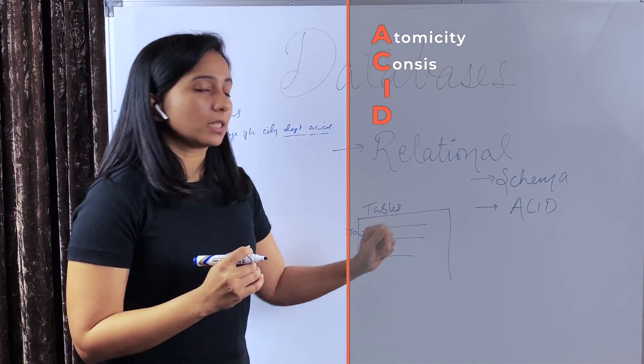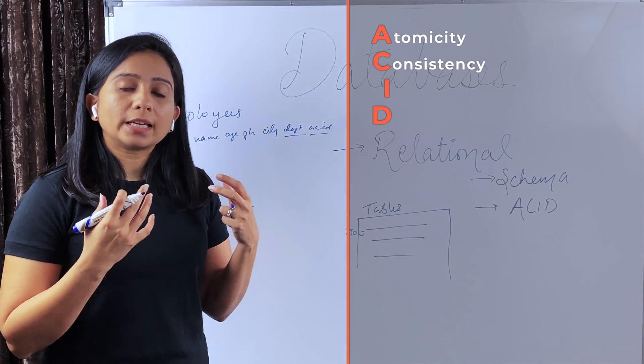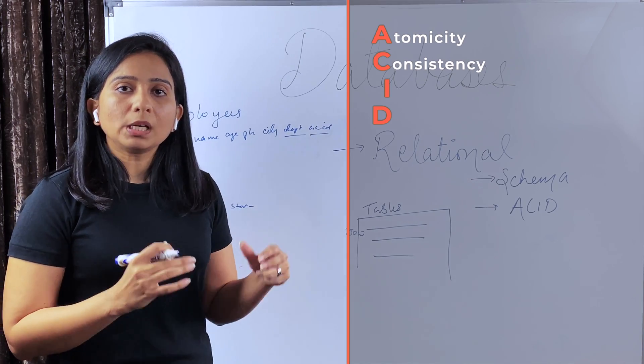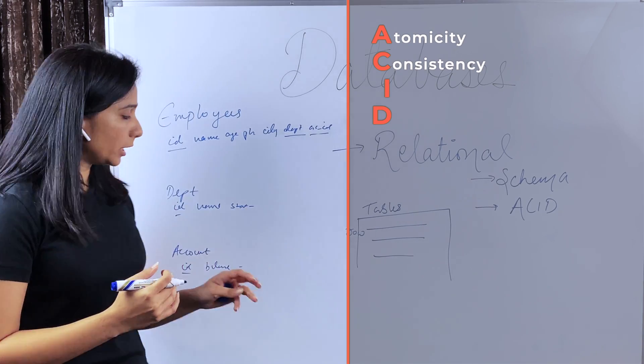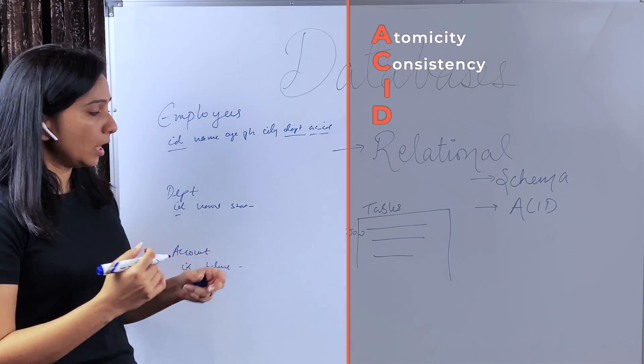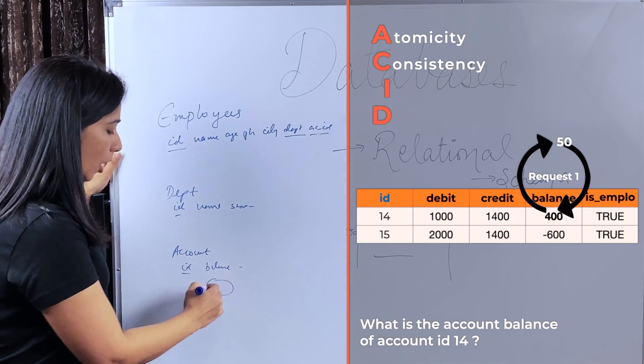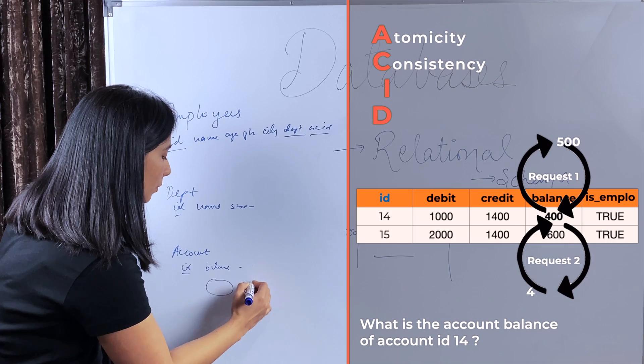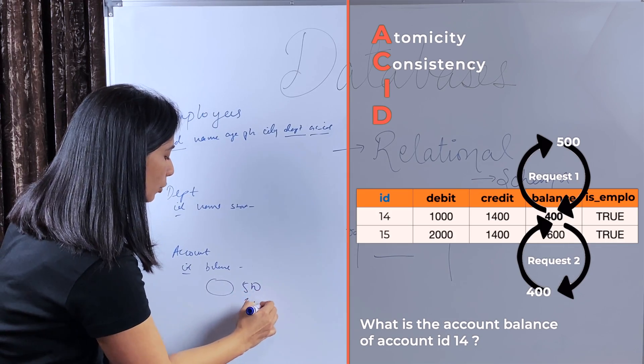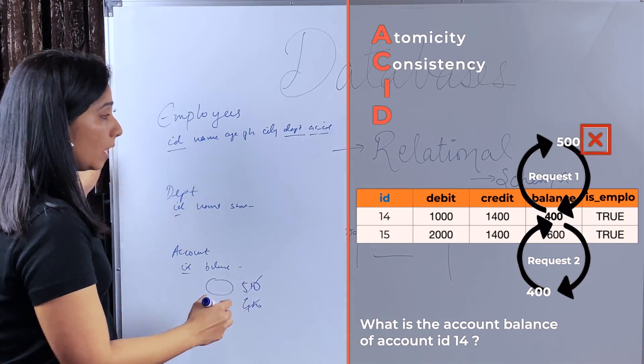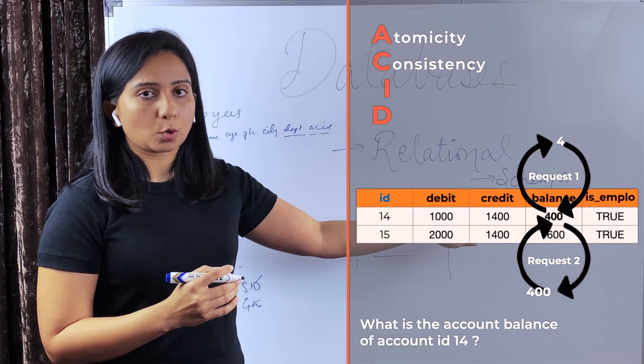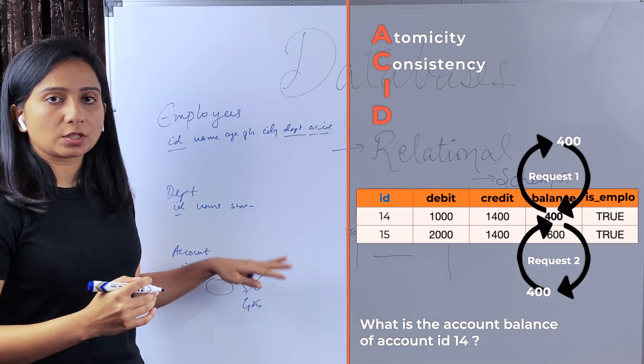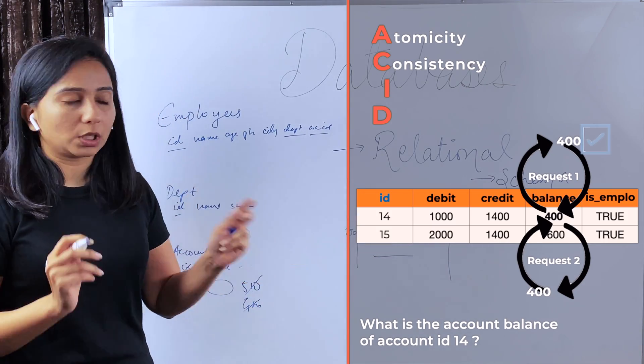Second is consistency. Consistency means that at any given point of time, the state of the database will be consistent. It will not happen that if two reads are happening, if two requests are trying to read the account balance, one request gets the response as 500 and another gets the response as 400. This is not possible if the DB supports ACID properties because your database is consistent. It will give the same value to both the requests.